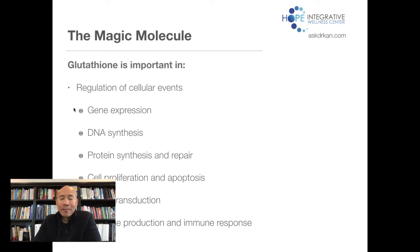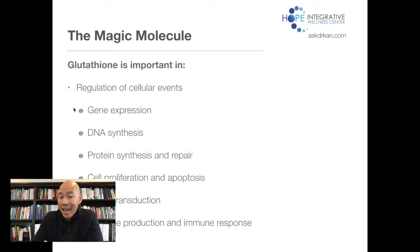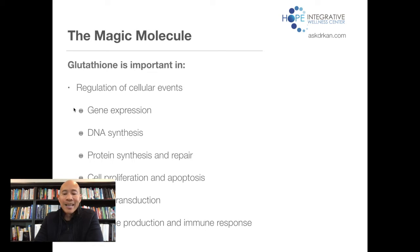Beyond just immune function, glutathione does so much more. It helps regulate cellular events like gene expression, DNA synthesis, protein synthesis and repair, cell proliferation and cell death, signal transduction, and most importantly cytokine production and immune response. This is really very important during this time when we're thinking about how to get our immune system ramped up to help defend against viruses — glutathione is one of the key things.